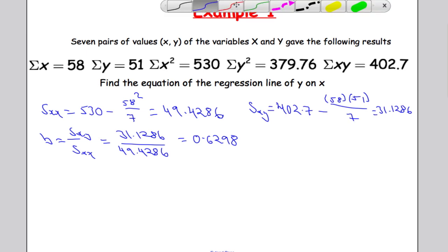And now I need to work out what a is. And a if we remember correctly is given by y bar minus b times x bar. So we need to work out y bar.